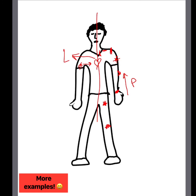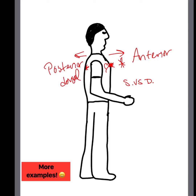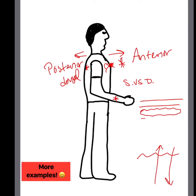Last but not least, we have superficial and deep. Remember, superficial is towards the body surface and deep is the contrary — like when you're swimming, going deep versus coming up to the surface. So the skin is superficial to the skeletal muscles or to the bones. Imagine this as layers: this is the skin, this is the muscle, and this is the bone. The skin is always superficial, but the bones are always deeper.